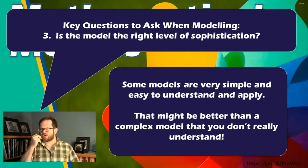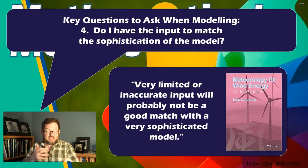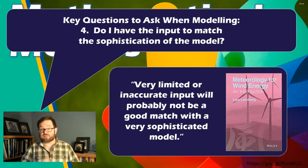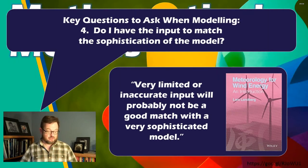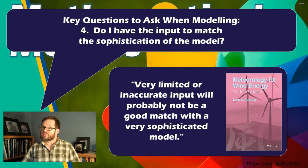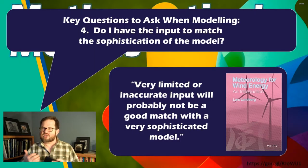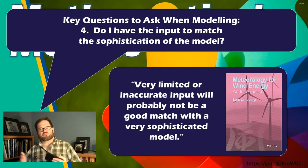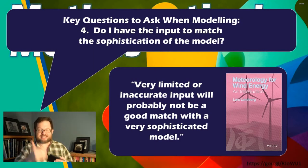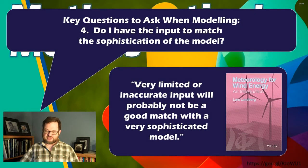Thinking further about this idea that there are simple models and complicated models, or simple models and sophisticated models, some of which will require very different kinds of data, a good question to be asking yourself is the fourth one. Do I have input data to match the sophistication of the model? For example, if you have relatively limited or relatively inaccurate input data, and you put that into a complex model, that might not be a very good combination. Your complicated model might not be able to make a very realistic depiction of what's going on if it has relatively poor data to work with. On the other hand, maybe a simpler model doesn't have so much sophistication, isn't so sensitive to small and even biggish problems in your input data.